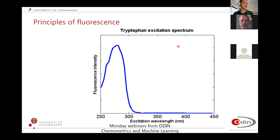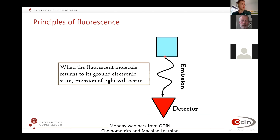A typical excitation spectrum — this is for tryptophan — shows that the intensity increases in the beginning and then decreases down to zero. So it doesn't give a signal across the whole UV-Vis spectrum, only in a specific region, which is where an electron transition is happening from the ground state. What we're really measuring is not the excitation — that's something we get as a secondary measurement. What we're actually measuring is the emission: the light that the fluorophores are capable of emitting, which we can detect.